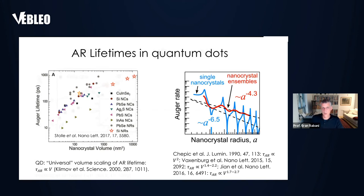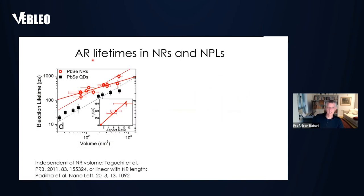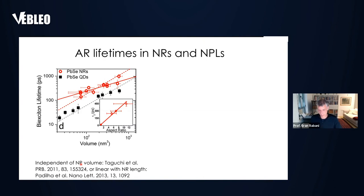Before we do that, the situation in other quantum-confined structures is even more confusing. What I'm showing you here is the Auger recombination lifetime as a function of volume for nano rods. While lead selenide quantum dots follow a universal volume scaling, the rods actually do not. Some of them do follow it, and some show a steeper dependence. In fact, there is a paper reporting that the Auger lifetime doesn't depend on the nano rod length at all, but only on its diameter.